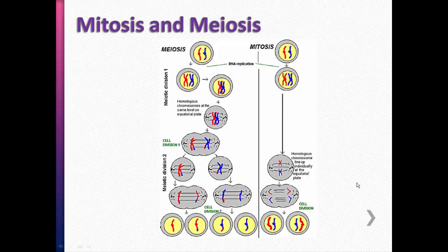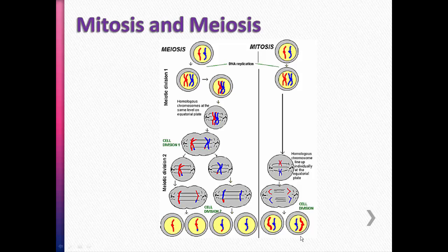Comparing mitosis and meiosis: in mitosis, a cell's DNA is duplicated and then the cell divides, resulting in two daughter cells that still have the same number of chromosomes. So if we start with two chromosomes, we end with two chromosomes. For humans, we start with 46 and stay at 46. We start with a diploid cell and end with a diploid cell — it doesn't change.